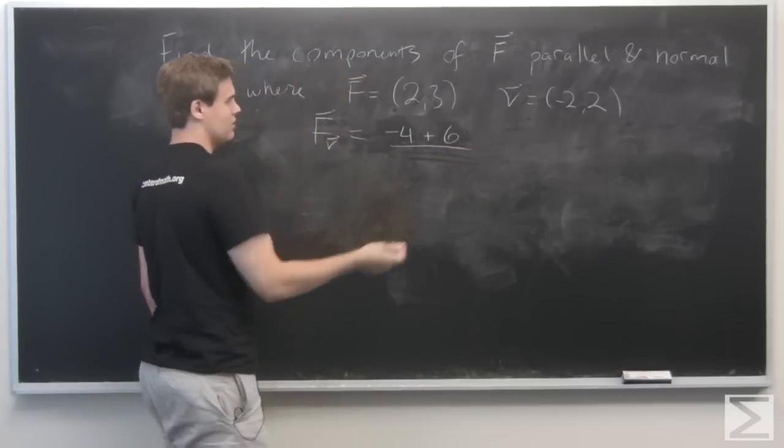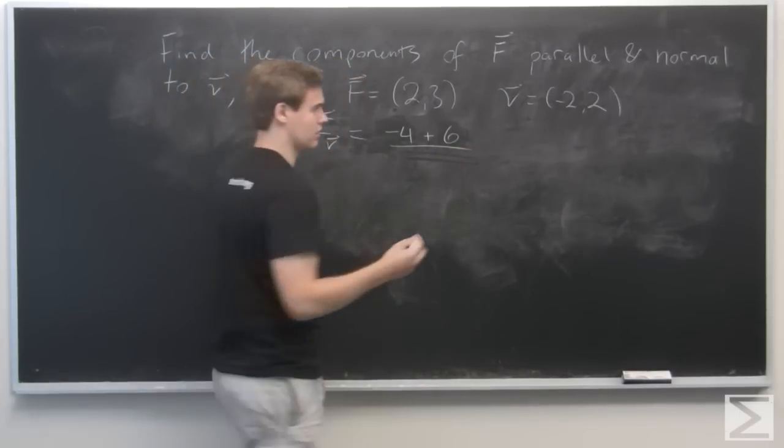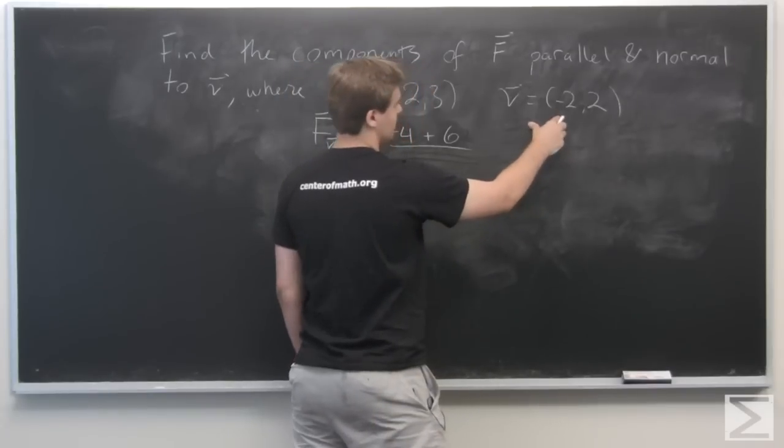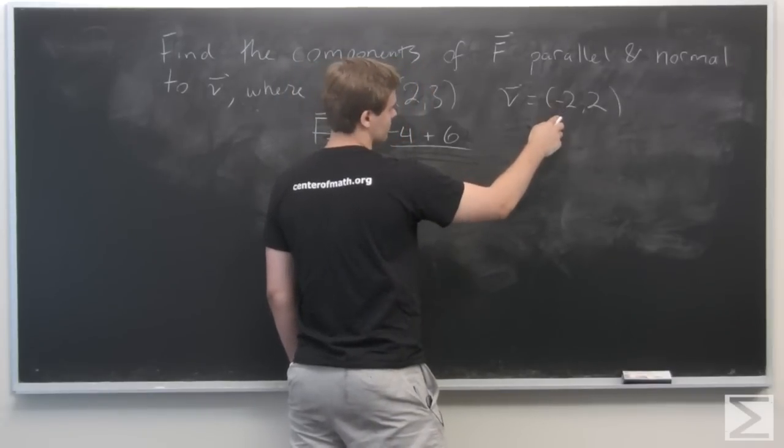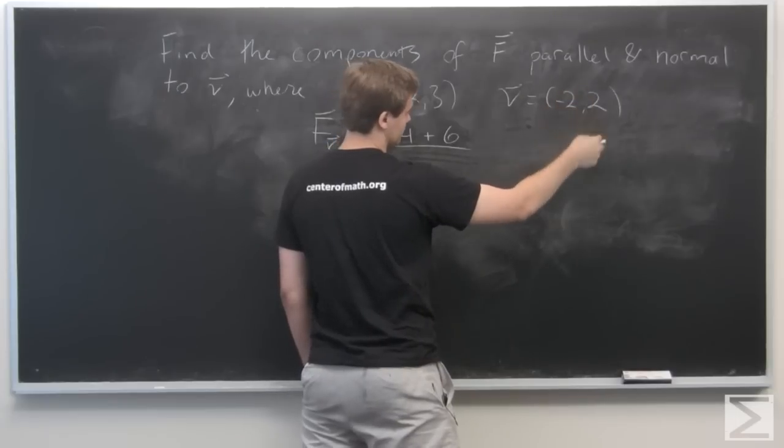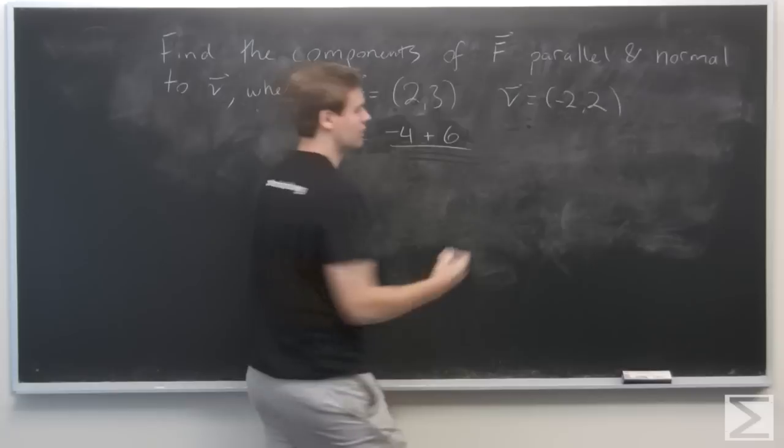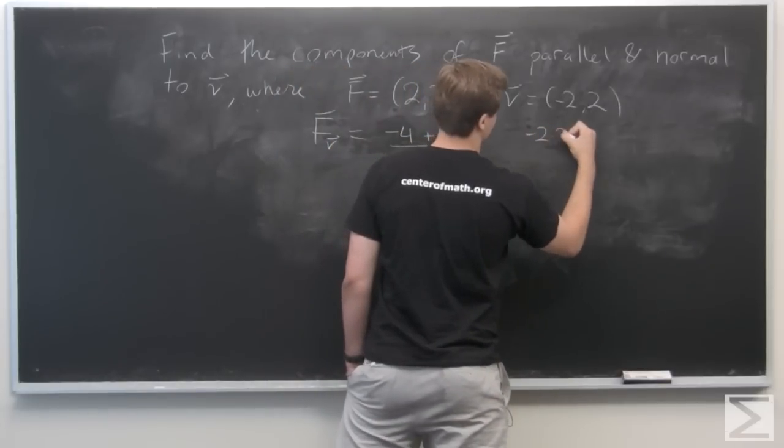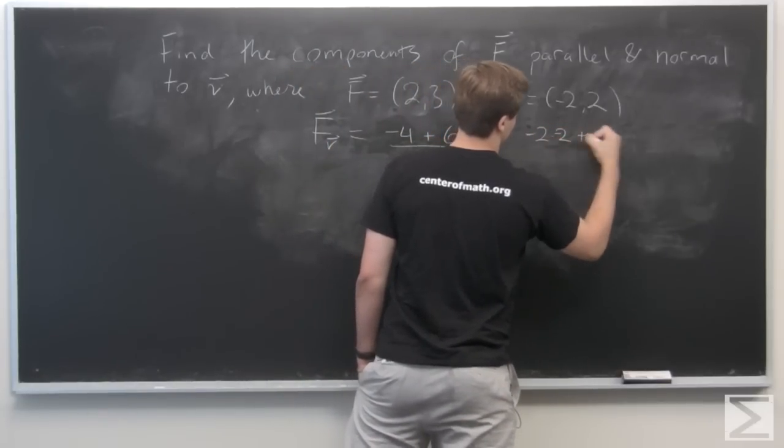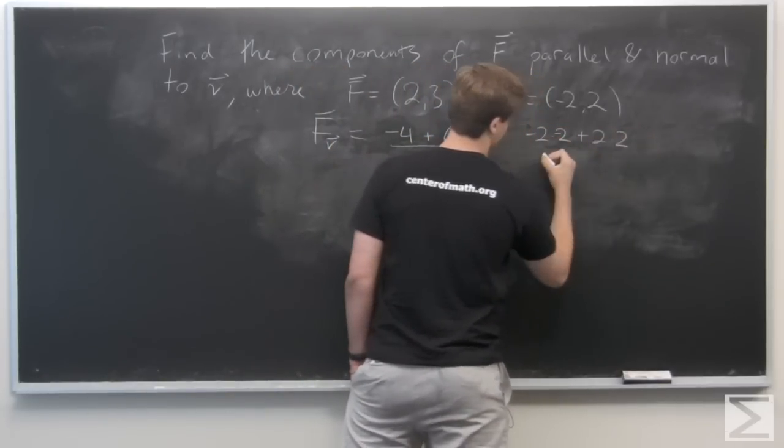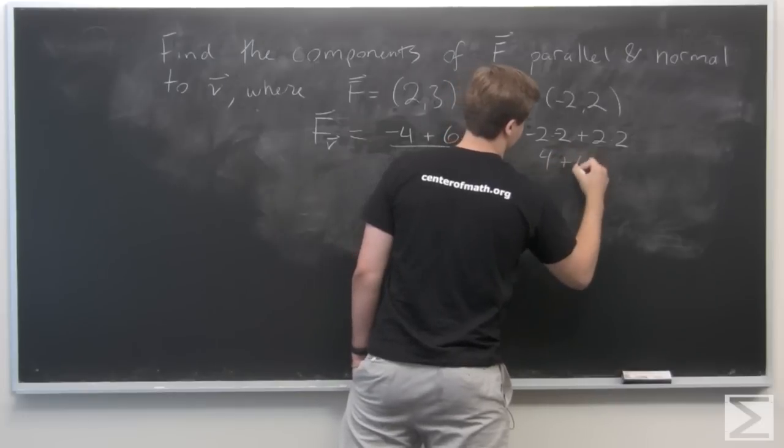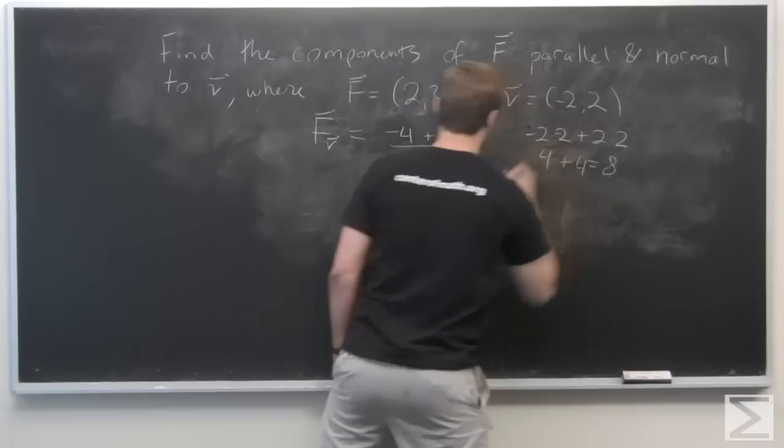And the norm of v squared is going to be v·v, so we see that v·v is going to be -2 times -2, plus 2 times 2, which is just -2 times -2 plus 2 times 2. Well, this is 4 plus 4, so 8.